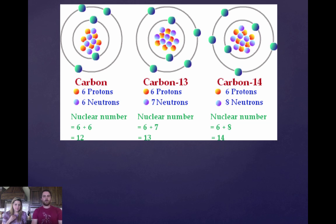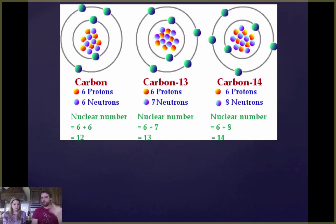We've got this example right here. We've got three different isotopes of carbon. That means that there are three different masses.